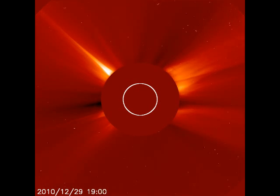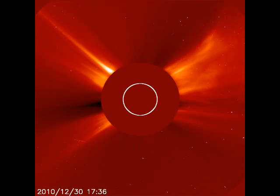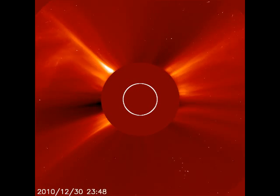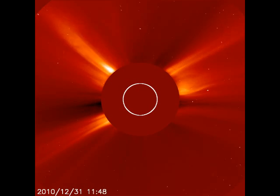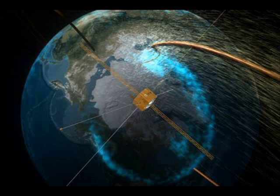Magnetic Portals Connect Earth to the Sun. Presented by Science at NASA, October 30, 2008. During the time it takes you to read this article, something will happen high overhead that until recently many scientists didn't believe in. A magnetic portal will open, linking Earth to the Sun 93 million miles away. Tons of high-energy particles may flow through the opening before it closes again, around the time you reach the end of the page.